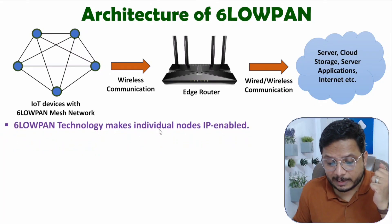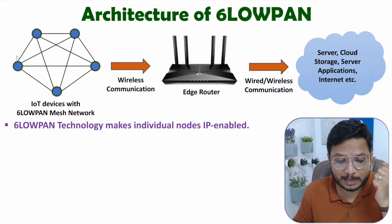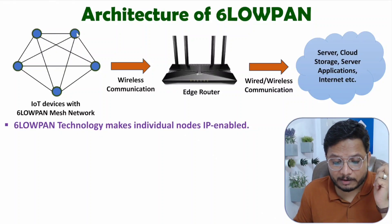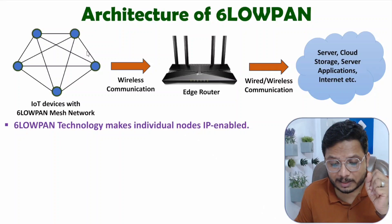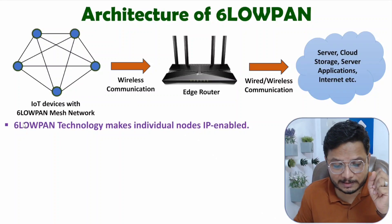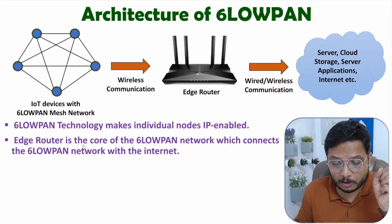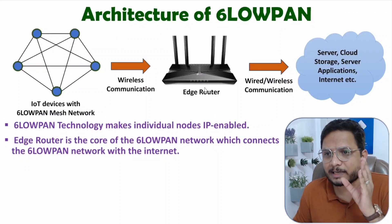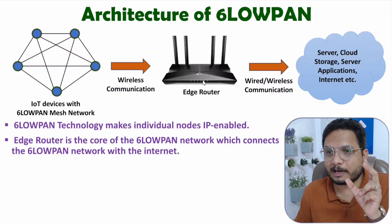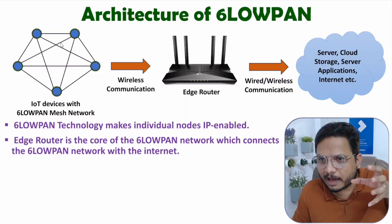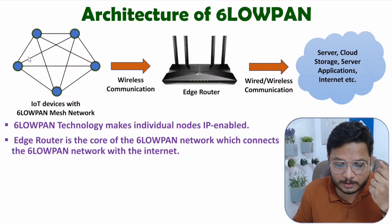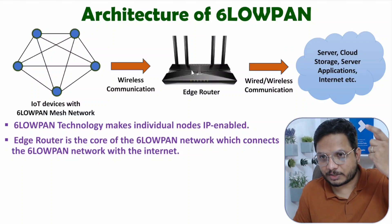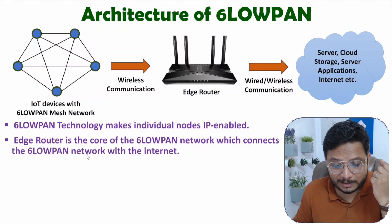6LoWPAN technology makes individual nodes IP-enabled. Each IoT node is provided with an IPv6 address and can transfer data wirelessly to the edge router. The edge router is the core of the 6LoWPAN network — it is the intermediary node that provides wide-range internet communication. Every time these nodes communicate with the edge router for internet communication, so the edge router connects the 6LoWPAN network with the internet.